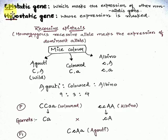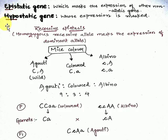The gene that masks the expression of another gene is known as the epistatic gene — 'epi' means above, so it is above the hypostatic gene because it is dominant and can mask the other. The hypostatic gene is the one whose expression is being hidden. So there is a clear difference: the epistatic gene hides the other's expression, while the hypostatic gene's expression gets hidden.